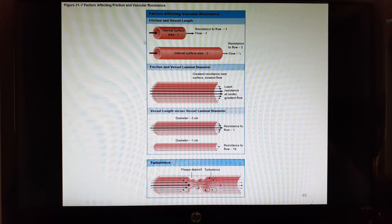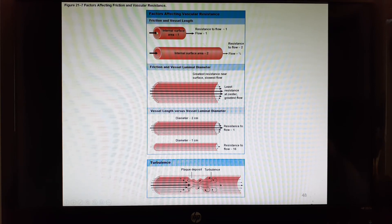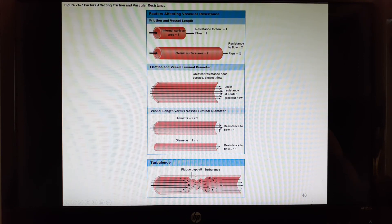So let's take a look here. Friction in vessel length. The smaller the length, resistance to flow is one, flow is one. A longer vessel has a higher resistance to flow is two. Friction in vessel luminal diameter. The larger the diameter, the lower the resistance, the lower the friction.